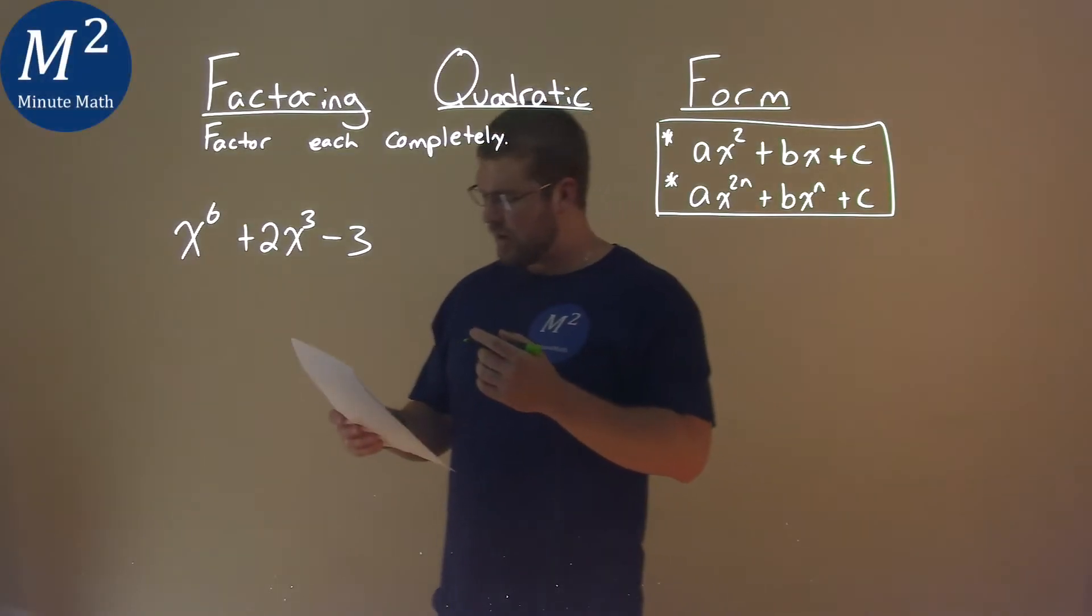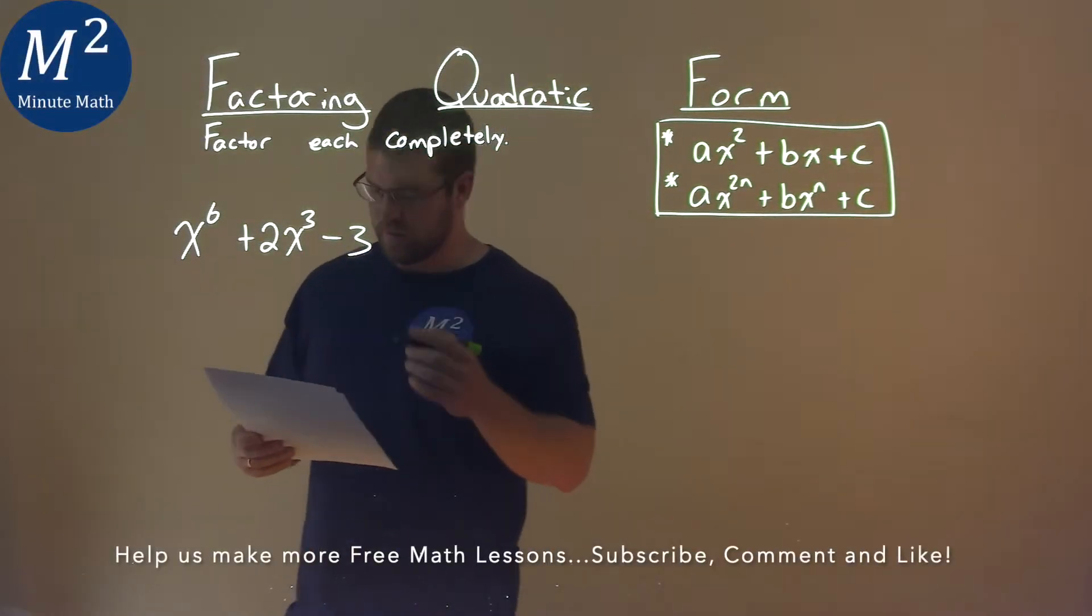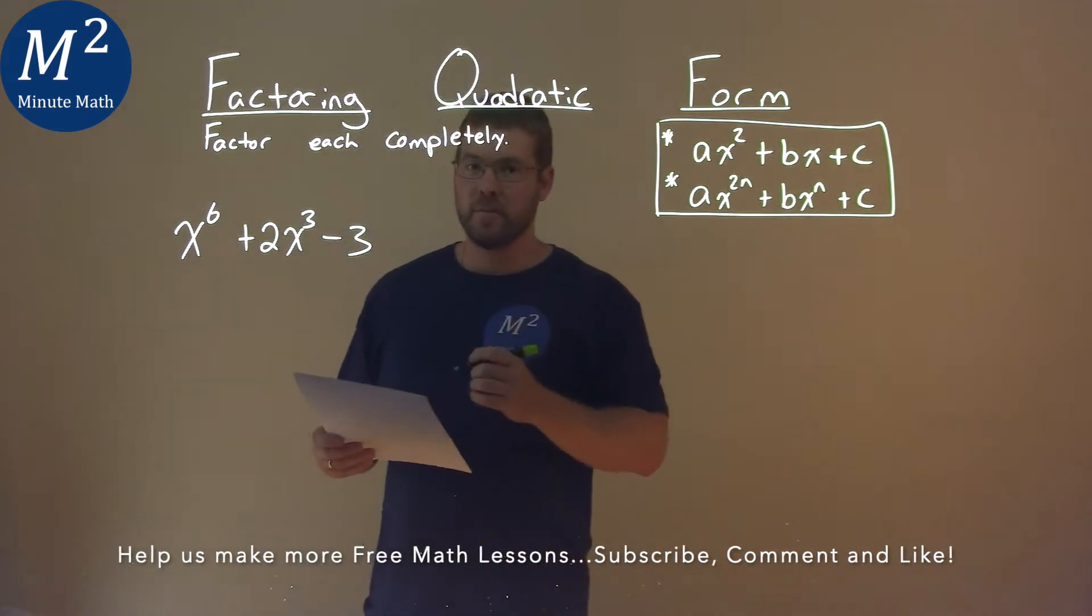We're given this problem right here, x to the 6th plus 2x to the 3rd minus 3, and we need to factor this completely.